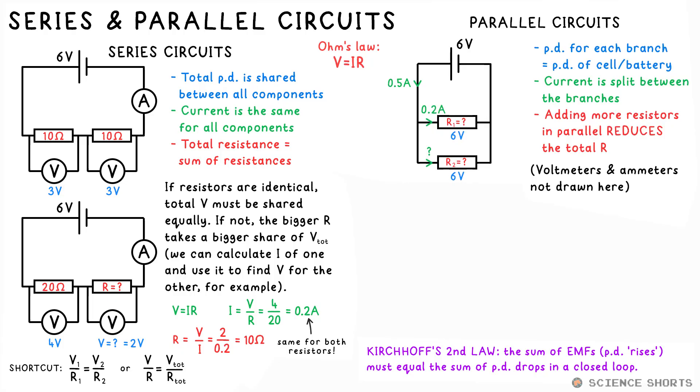The rules for parallel circuits are the opposite. The PD is the same for every branch. Again, this is true because of Kirchhoff's second law. The battery is actually involved in two loops, you see. So therefore, the PD drops in both loops must be the same. Current is shared between each branch, and the more resistors you add in parallel, the lower the total resistance. This, by the way, is because you're giving the current more routes to move through the circuit, which means more current can flow.